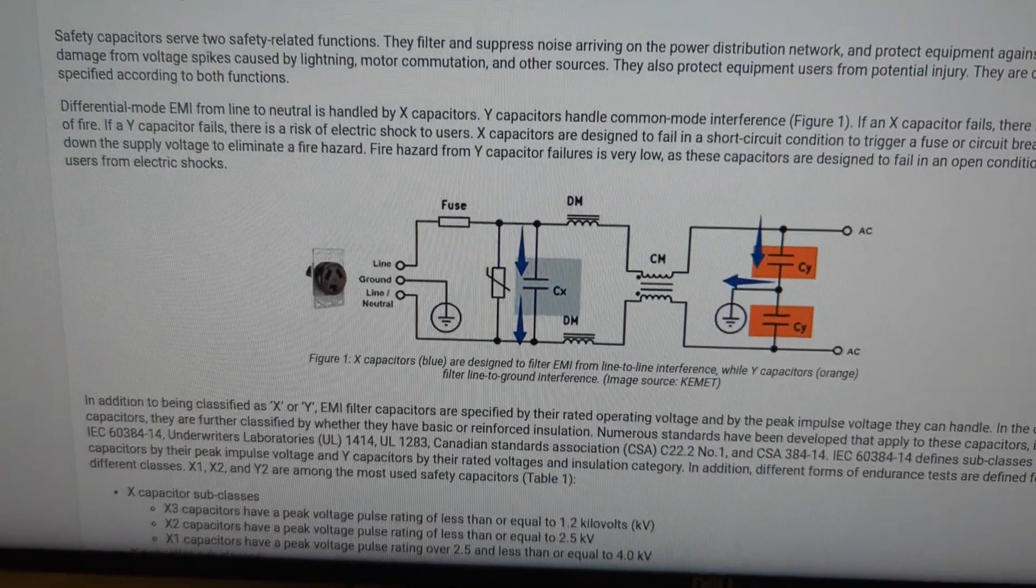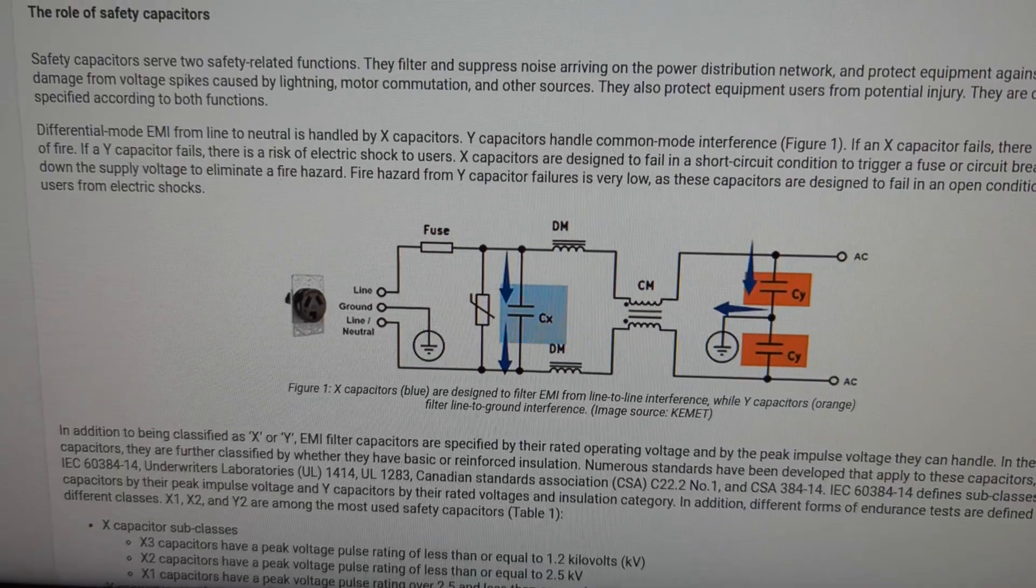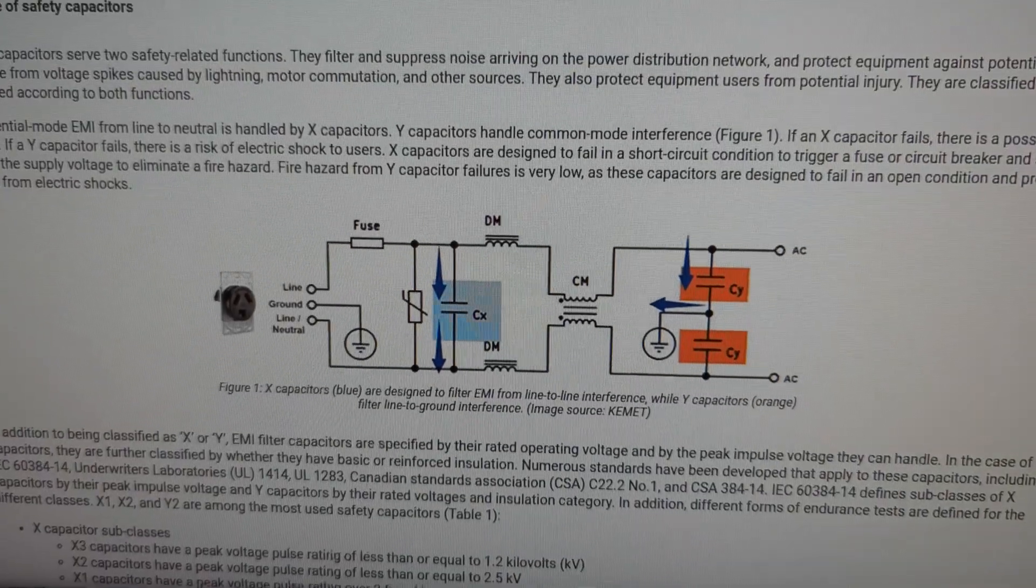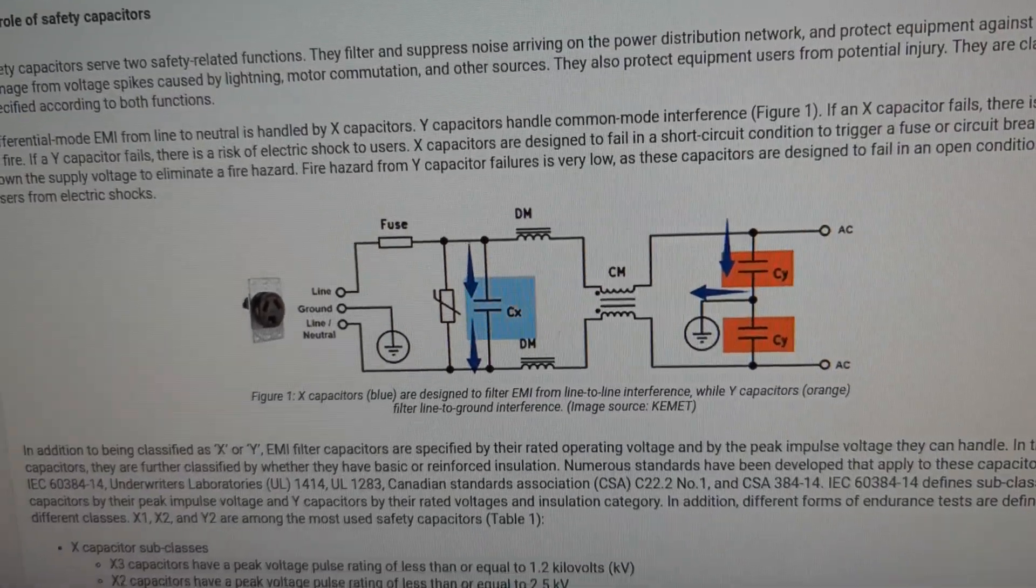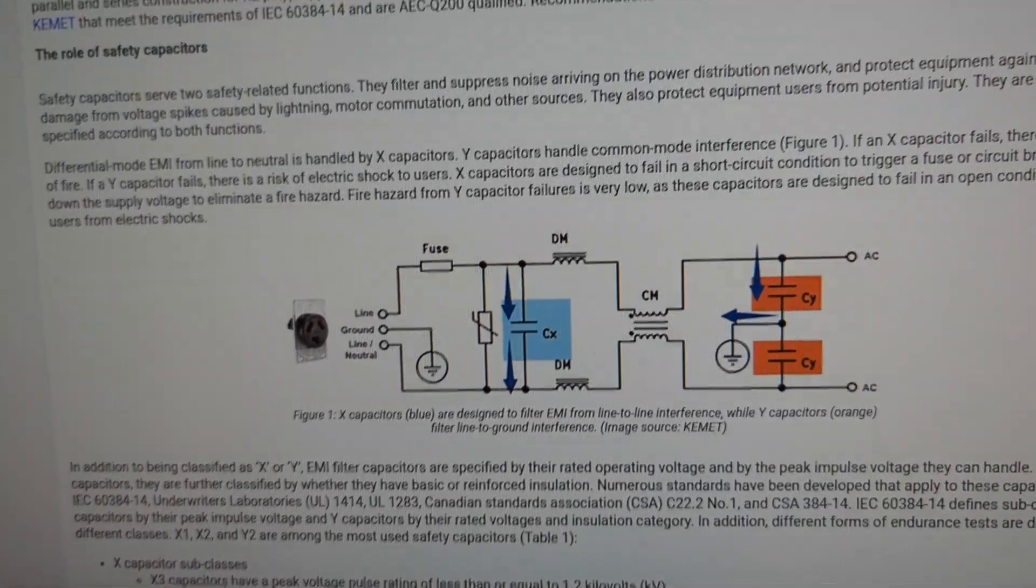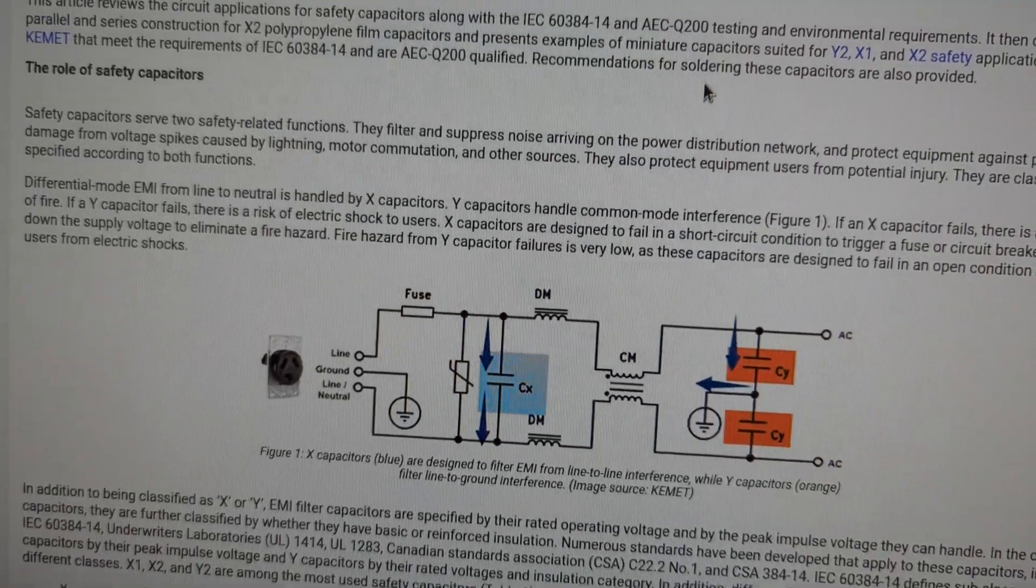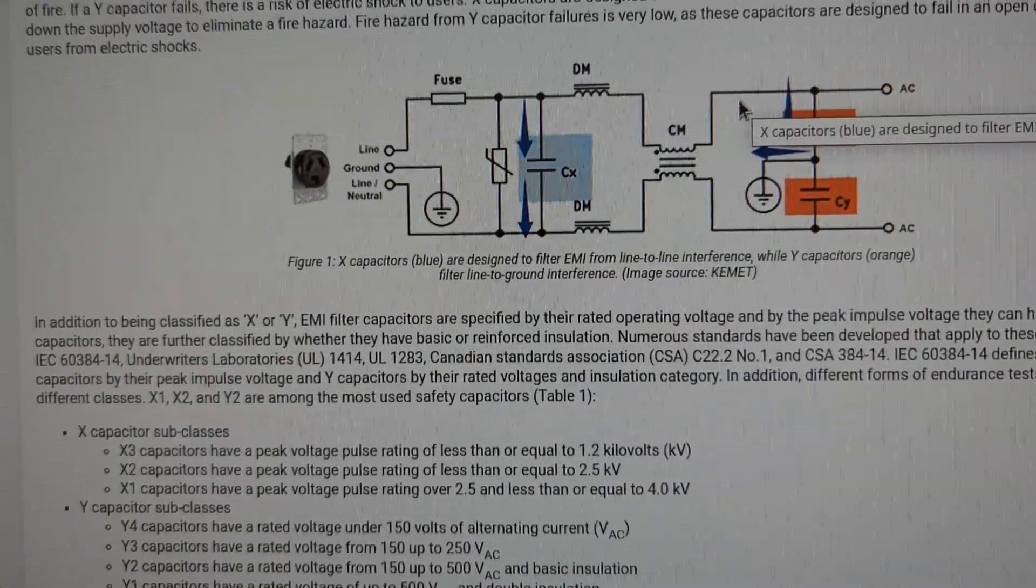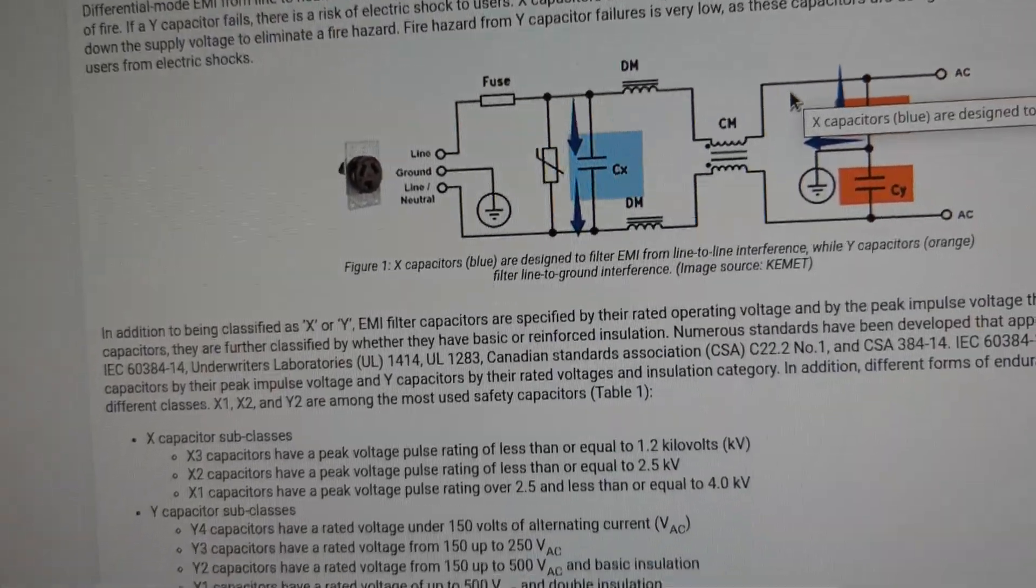So this means that the way this capacitor fails matters in such case. These capacitors can see really high voltage across them. So they are rated on certain peak voltages, let's say. For example,